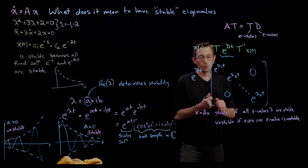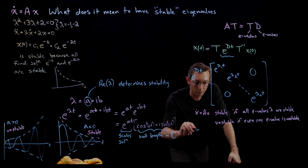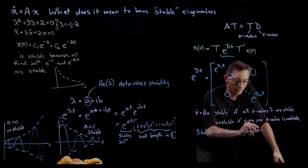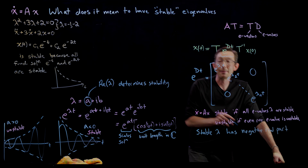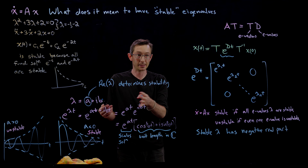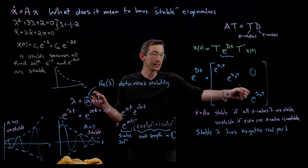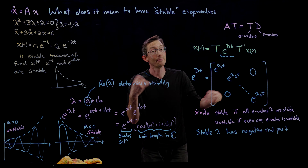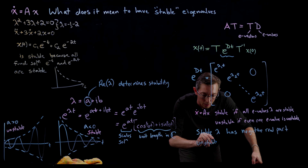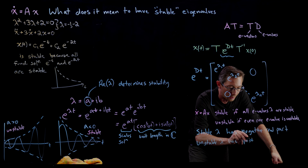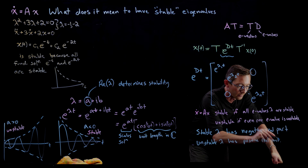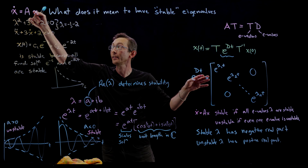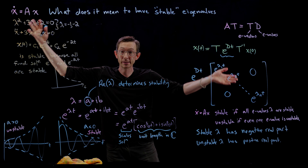A stable lambda has a negative real part. The imaginary part has nothing to do with stability — it just causes oscillation at frequency b. But the real part of all lambdas must be negative for the system to be stable. An eigenvalue lambda is stable if it has a negative real part, and unstable if it has a positive real part. If even one eigenvalue of A has a positive real part, the whole system is unstable.